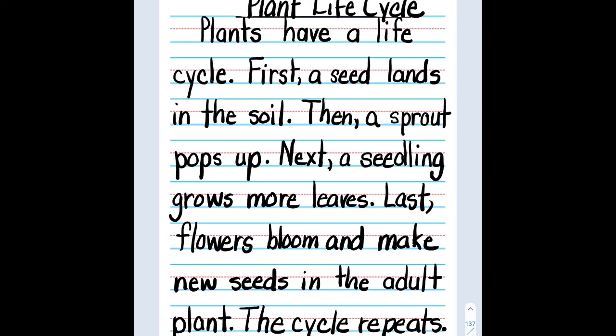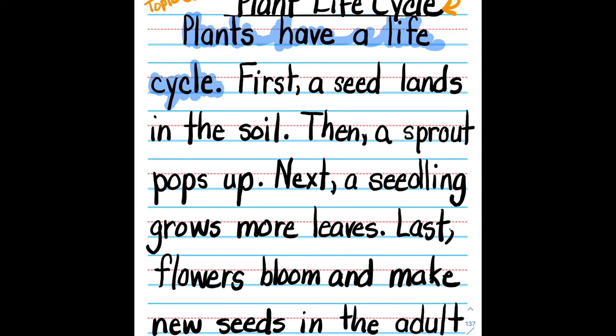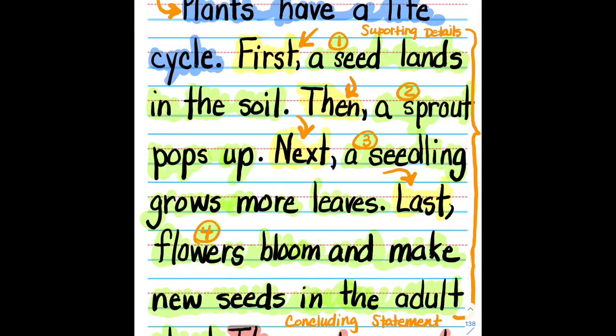Now let's sum up what we've learned about an informative writing piece. We have the title. We have the topic sentence. We learned to use transition words or time order words like first, then, next, and last. We also learned to include supporting details. And we had one, two, three, four. And last, we learned how to use a concluding statement.